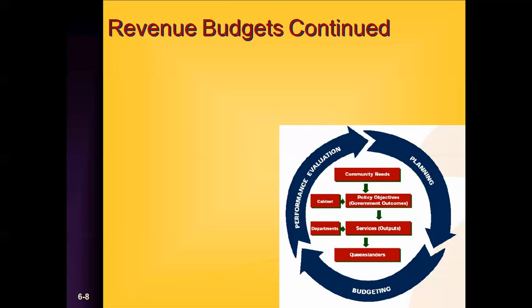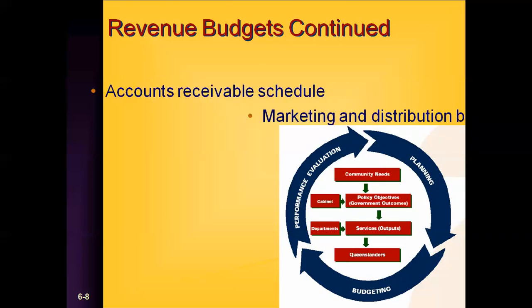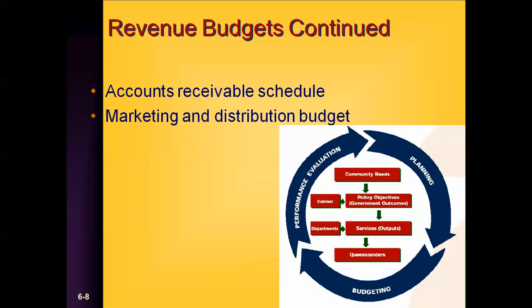Other things that will be generated from the revenue budget are your accounts receivable schedule and your marketing and distribution schedule. Accounts receivable are the expected amounts of sales that are still owed by the customer. If you sell something to a customer on credit, they don't pay you right away — they pay you later. Very similar to what you did in the business plan when you bought items for your coffee business and didn't have to pay for 45 days.